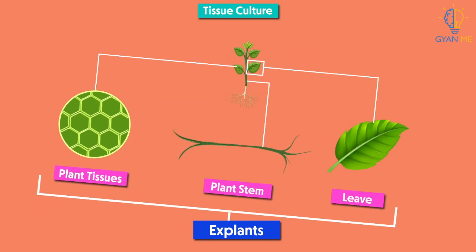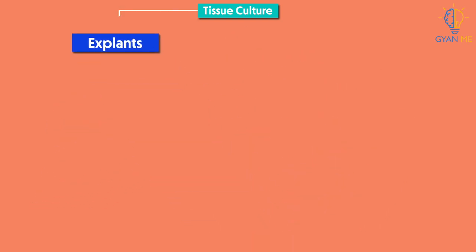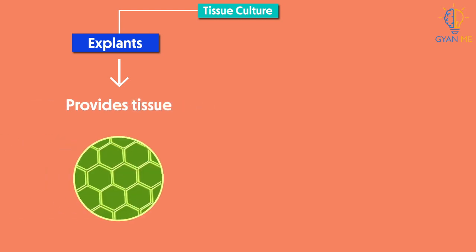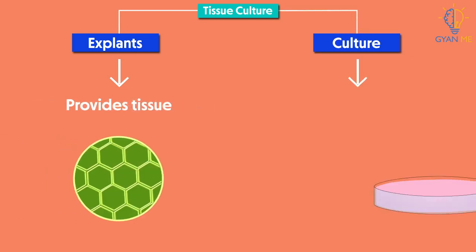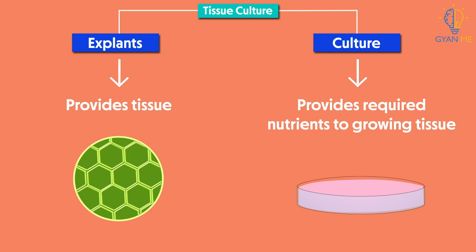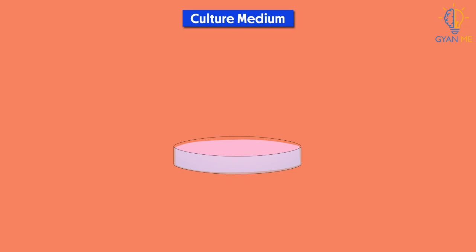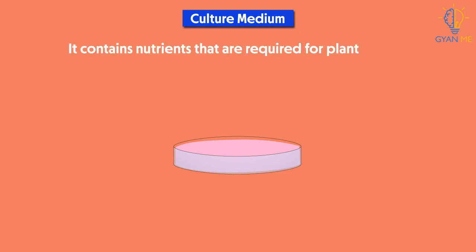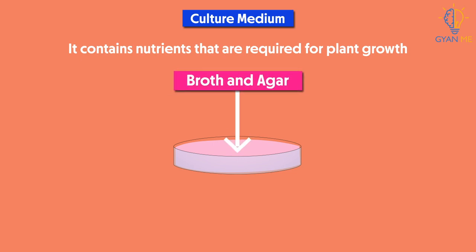Now think about what this explant provides us. An explant provides tissue, and the culture provides the required nutrients to the growing tissue — and so now you know why this method is called tissue culture. The culture media contains nutrients required for plant growth, and it is called broth or agar.